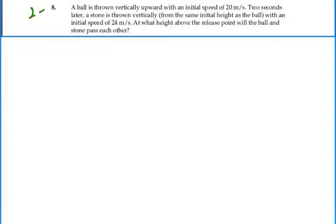Take a look at problem number 28. A ball is thrown vertically upward with an initial speed of 20 meters per second. Two seconds later, a stone is thrown vertically from the same initial height as the ball with an initial speed of 24 meters per second. At what height above the release point will the ball and the stone pass each other?